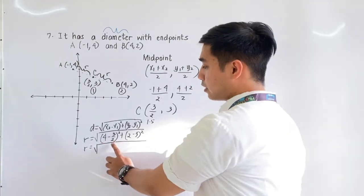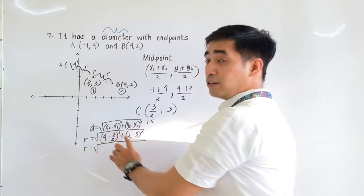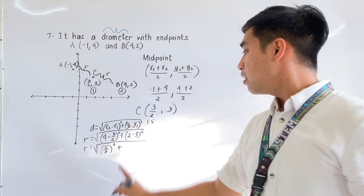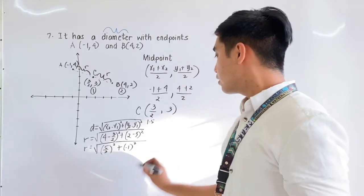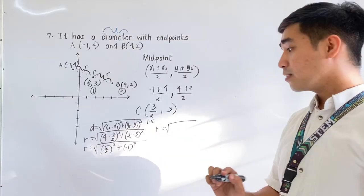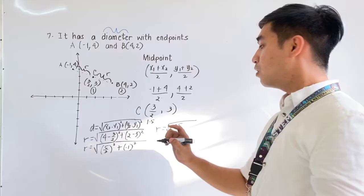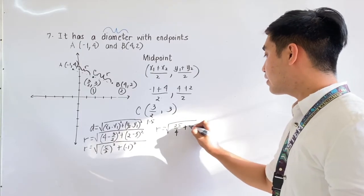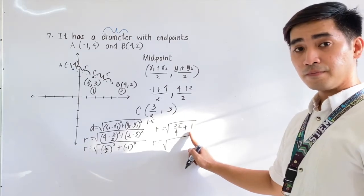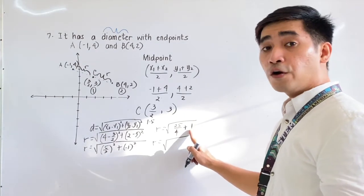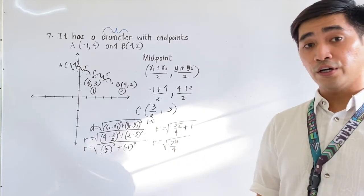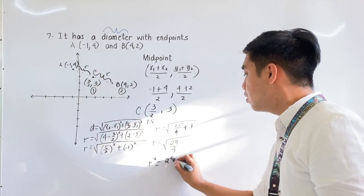r equals the square root of 4 minus 3 halves: multiplying, 2 times 4 is 8, 8 minus 3 is 5, therefore that is 5 halves squared, plus 2 minus 3 is negative 1 squared. So r equals the square root of 25 over 4, plus 1. Combining: 4 times 1 is 4, 4 plus 25 is equal to 29, therefore that is 29 over 4. So r squared is equal to 29 over 4.